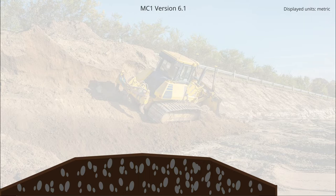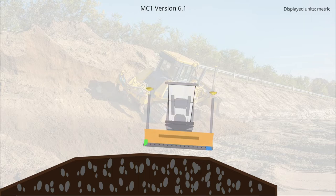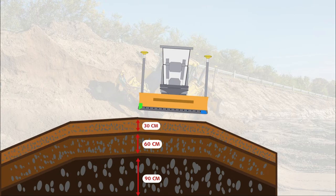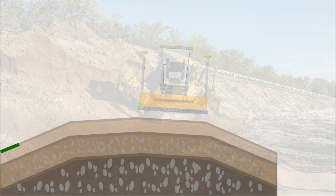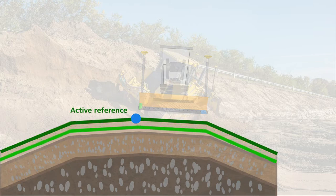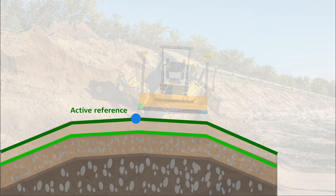In almost any earth-moving task using machine control, operators constantly work with the offset to cut and fill material. They set the offsets depending on the material, working conditions, and how close they are to the target value. When we apply an offset to an active reference, MC1 replicates the reference offset by the chosen value, creating a new target position.